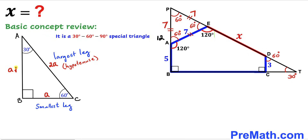Now let's apply this rule to the tiny right triangle TCD. Side CD is the smallest side and side TD is the longest side. In a 30-60-90 triangle the longest leg is twice the smallest, so if CD is 3 then TD must be 6 units.